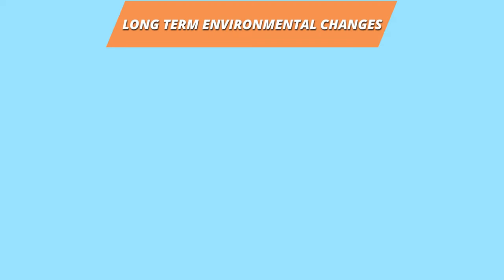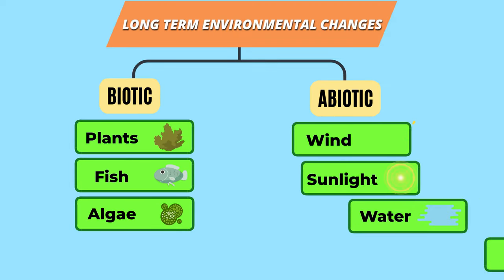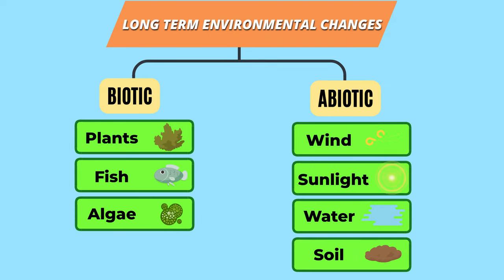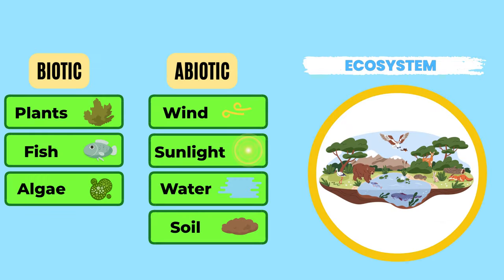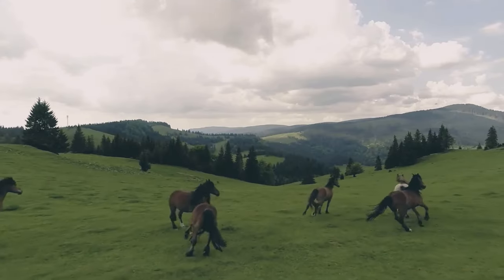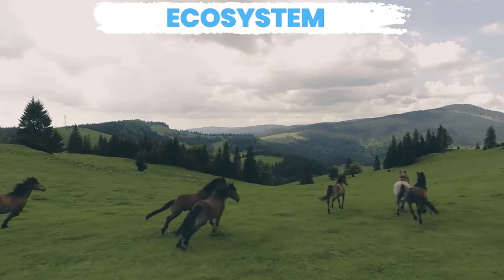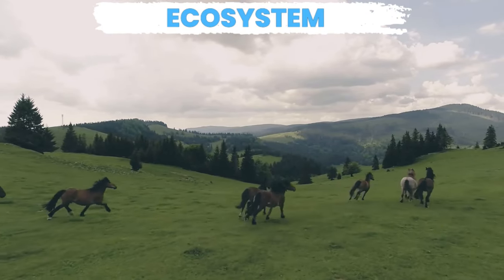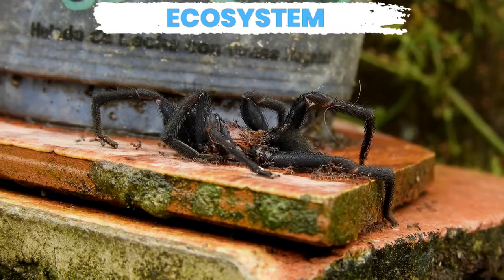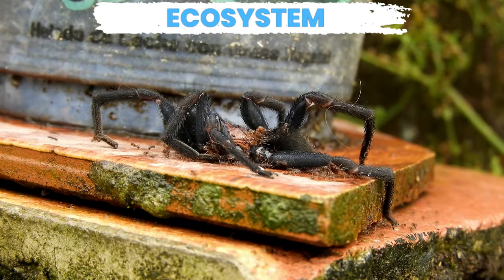Long-term environmental changes affect the biotic and abiotic factors in the ecosystem permanently, but happen slowly. This gives populations enough time to either adapt or relocate to a new habitat, otherwise they might become extinct.